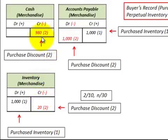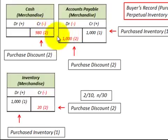The balancing entry goes to cash, where we pay $980. So we owed $1,000 and ended up paying $980 by taking the purchase discount.